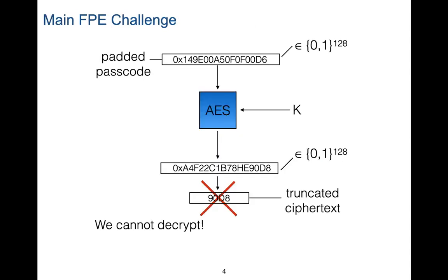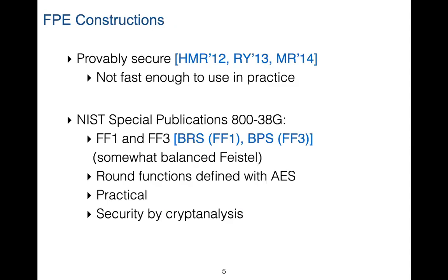One way to think of format preserving encryption is to use traditional block ciphers like AES, because AES is strong, has been analyzed for a long time, and is very fast. But the problem is keeping the format in the ciphertext — if we truncate it, we cannot decrypt it back. Counter mode is another idea, but it requires encryption and decryption to sync and maintain counters. Instead, a big line of research has proposed many FPE constructions. The most notable are the NIST standards FF1 and FF3, which are based on Feistel networks with AES-defined round functions.